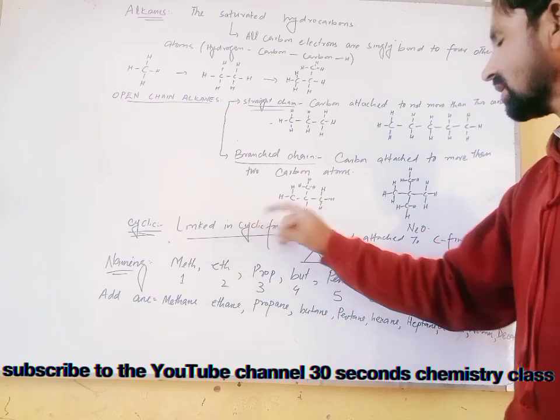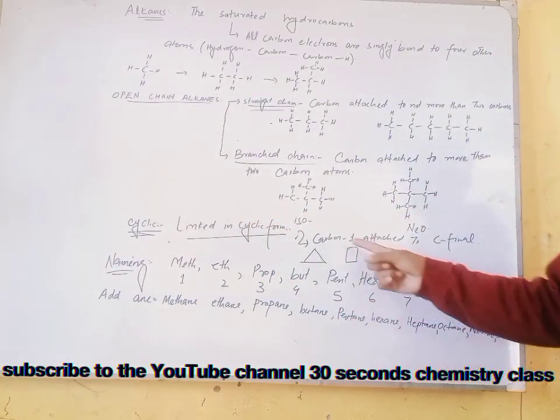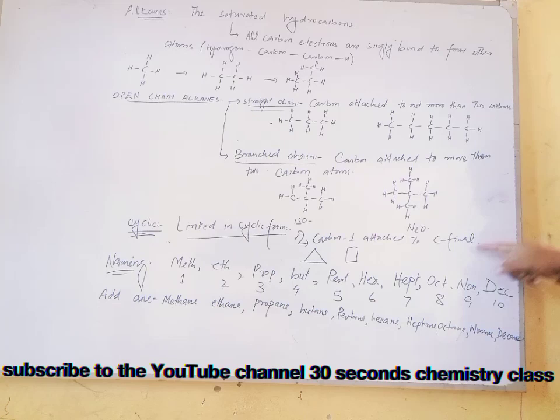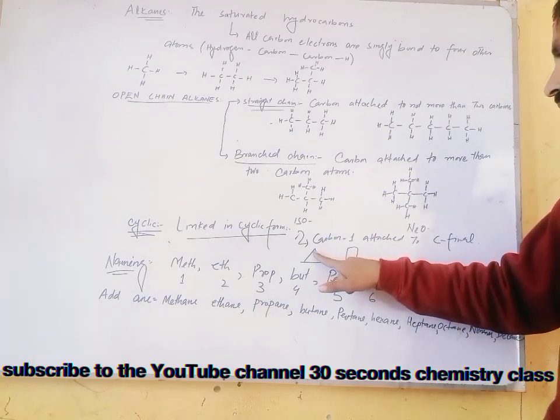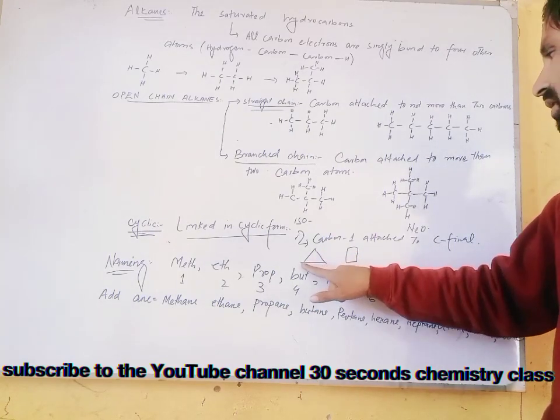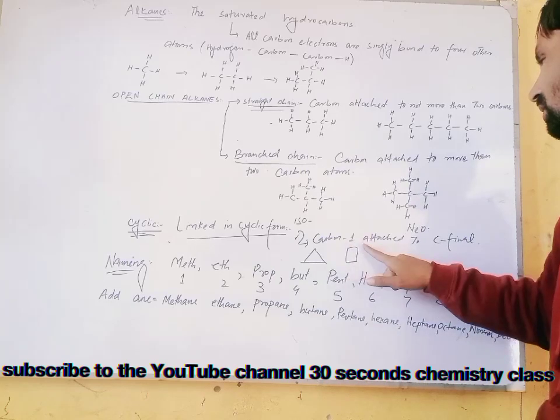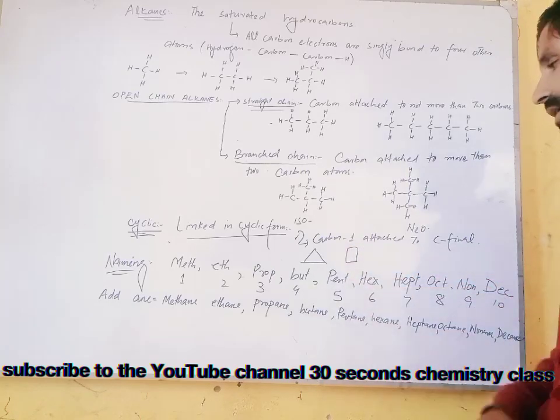Cyclic. Linked in cyclic form. Here carbon one will always be attached to the final carbon. If this one is carbon number one, this is two and this one is the final. If this one is one, this is two, this is three and this one is the final.